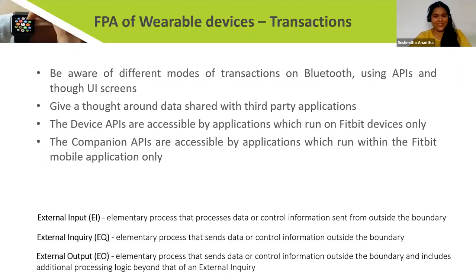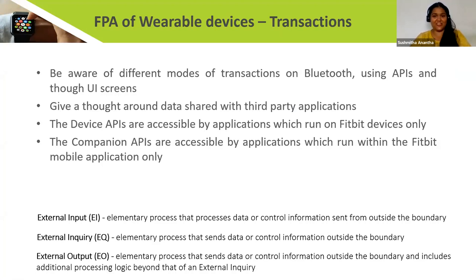After seeing the data functions, we come to the transaction functions. IFPUG identifies three types of transactions: EI, EQ, and EO. A consideration to be careful about is there will be on-screen transactions and off-screen transactions between different devices, different applications, and the cloud. There are a lot of APIs that these devices use to communicate with each other. We apply the IFPUG rules to identify the transactions.